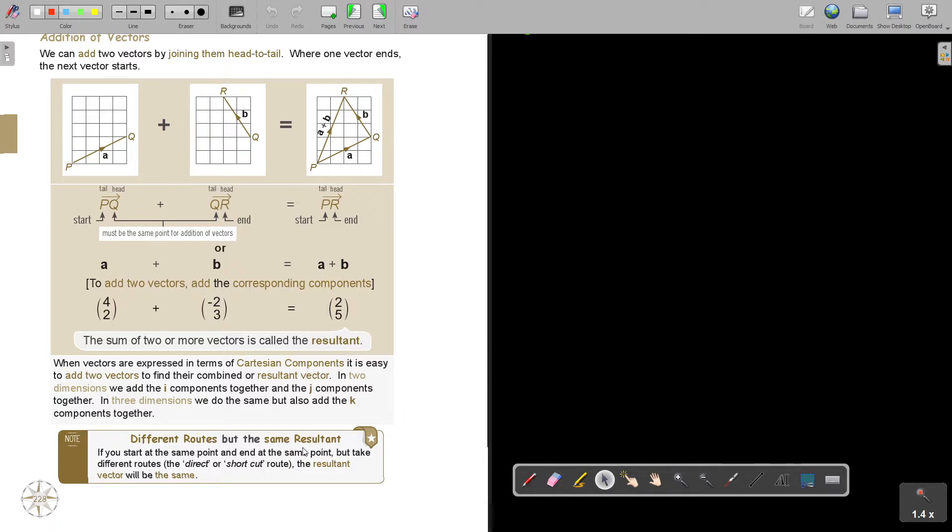Different routes, but the same resultant. If you start at the same point and you end at the same point, but take different routes, the direct or shortcut route, the resultant vector will be the same.